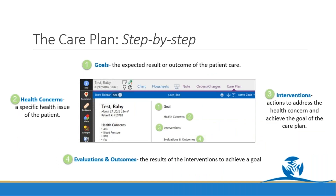The care plan module is composed of four sections: the goal or expected outcome of patient care, like improving or controlling blood pressure; the health concern or specific health issue, like hypertension; the interventions or actions taken to address the health concern and achieve the main goal, like exercising regularly or practicing stress management techniques; and the evaluation and outcome section, where you document the results of those interventions.